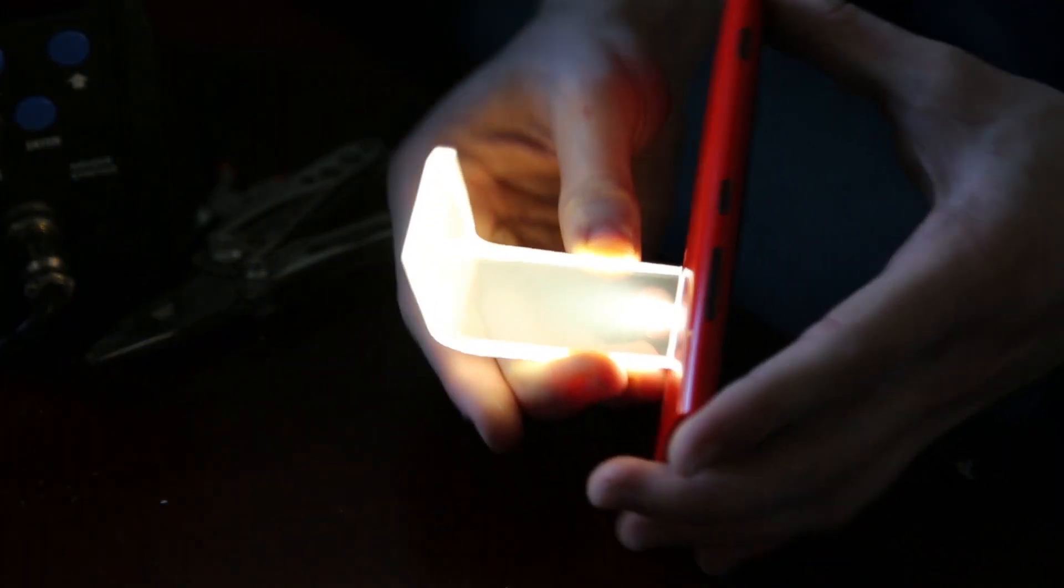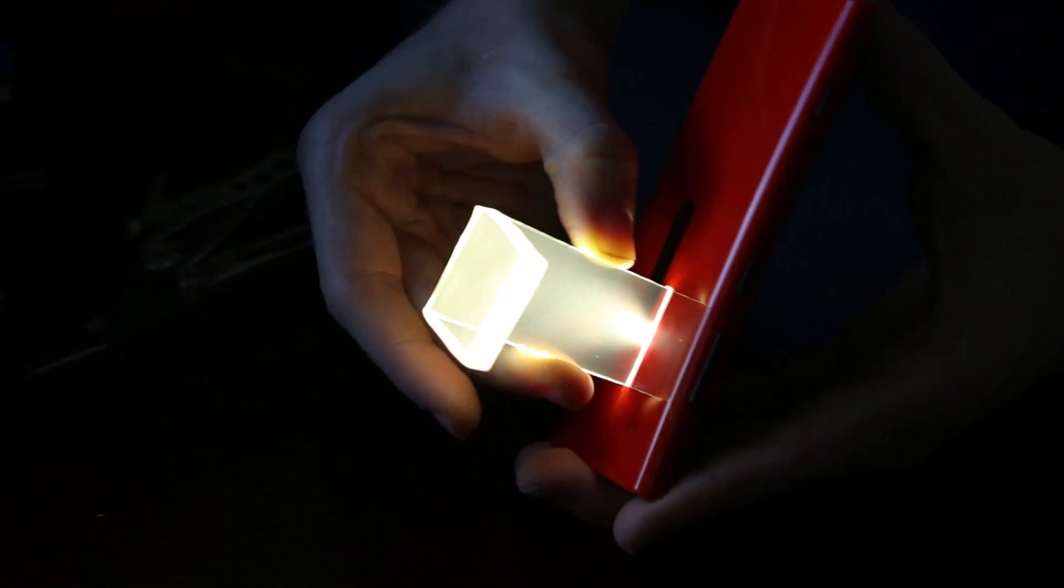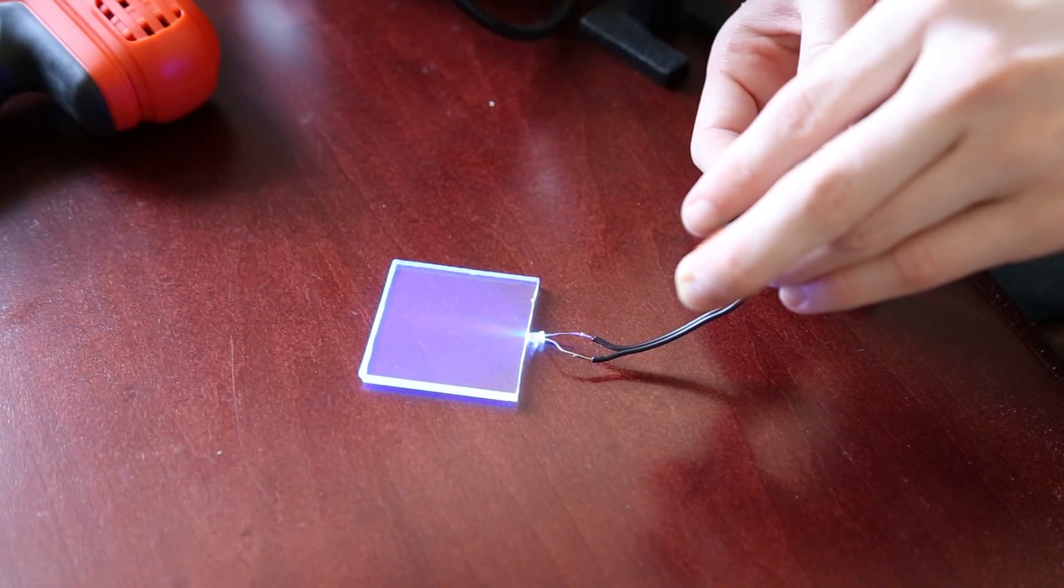So as you can see, with a heated bend, the light actually flows around the corner and into the other part of the acrylic. So that's with a simple blue LED.